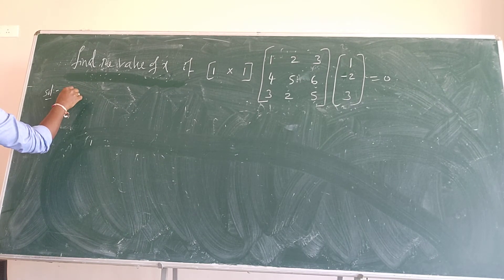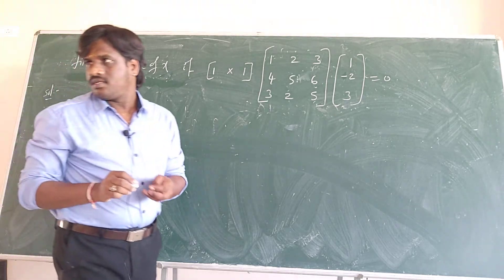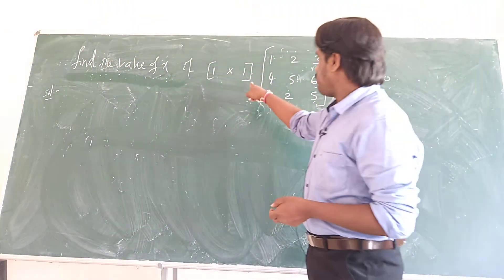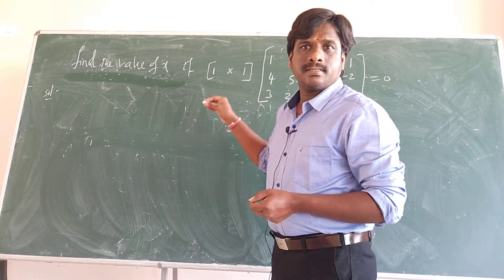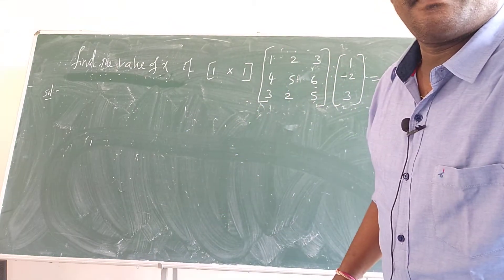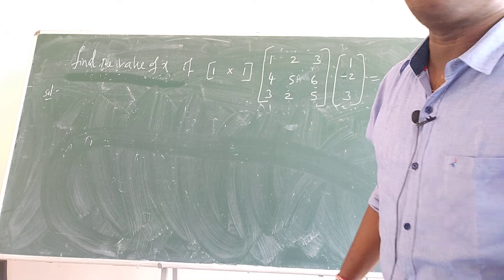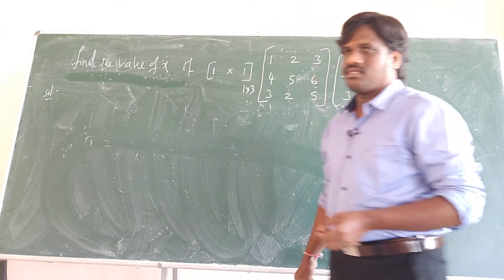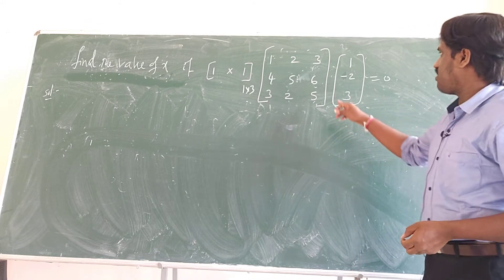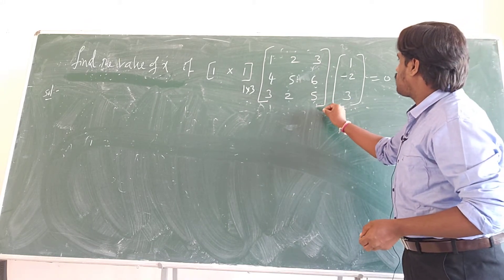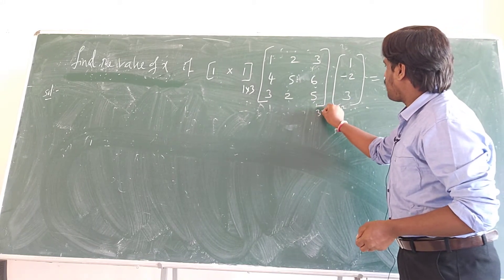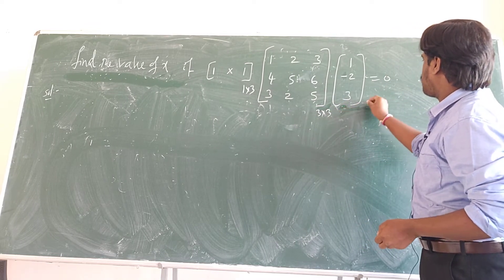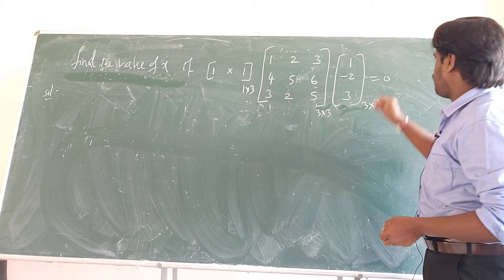First I will keep this one. Write the order. So our target must be the order. What is the order of this matrix? The order of the first matrix is 1 by 3. What is the order of the second matrix? 3 by 3. And what is the order of the third matrix? 3 by 1.